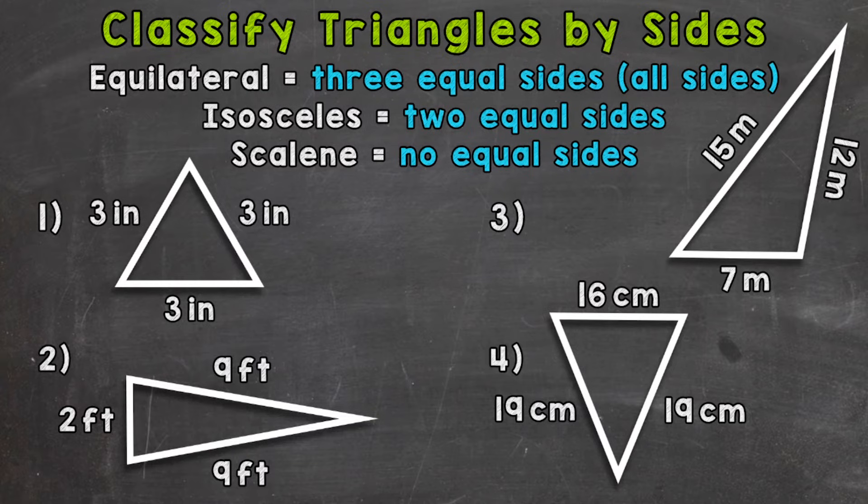We have a triangle with three equal sides. Each side is three inches. So this would be an equilateral triangle. Equilateral. All three sides equal.